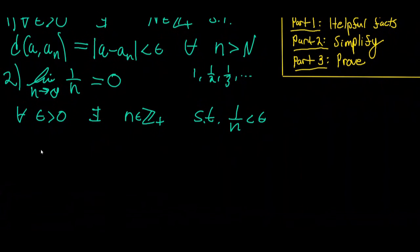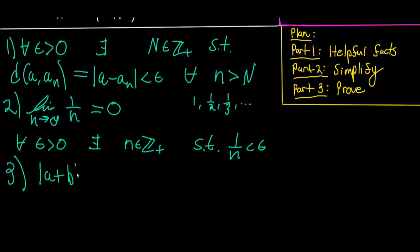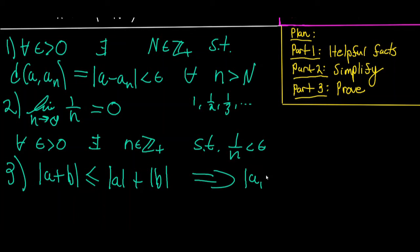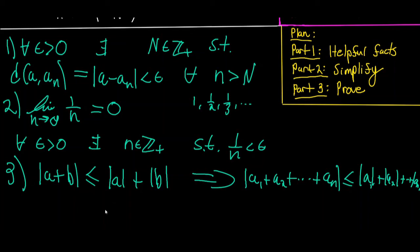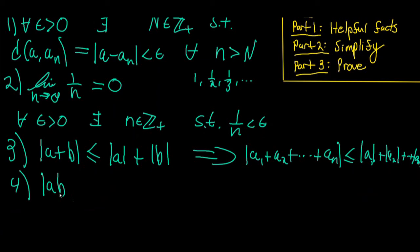Helpful fact 3: Since we have absolute values and sums, it's useful to have the triangle inequality: the absolute value of a plus b is less than or equal to the absolute value of a plus the absolute value of b. This generalizes to the absolute value of a₁ plus a₂ plus all the way up to aₙ being less than or equal to the sum of their individual absolute values. Helpful fact 4: The absolute value of a times b equals the absolute value of a times the absolute value of b.